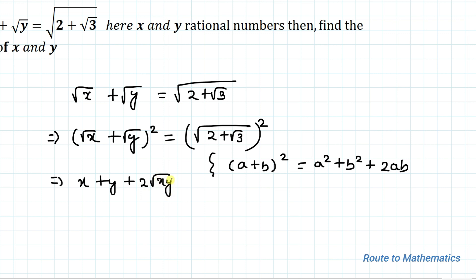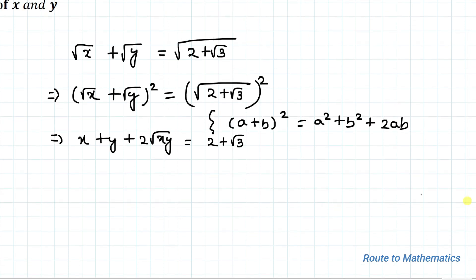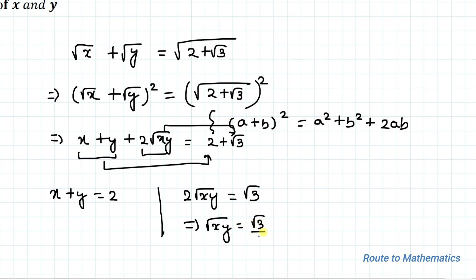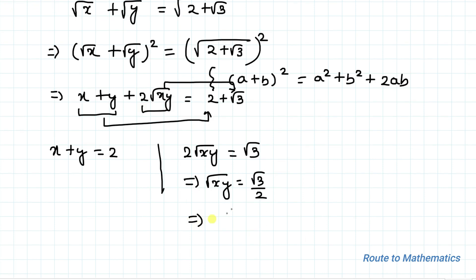This equals 2 + √3. In the next step, we equate the integer part with the integer and the radical part with the radical. So we get x + y = 2, and 2√(xy) = √3. This implies √(xy) = √3 / 2. Squaring both sides, we get xy = 3/4.